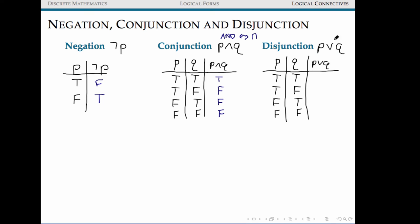Disjunction, on the other hand, is true if either p or q is true. This is an inclusive or, and it behaves similarly to the union of sets. If both p and q are true, the disjunction is true. If p is true and q is false, it's true. If p is false and q is true, it's also true. But in the case where both forms are false, the combined form is false.